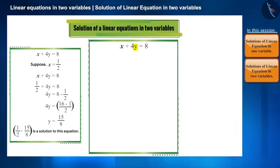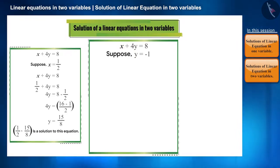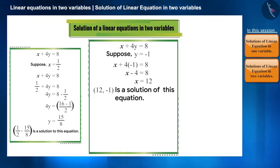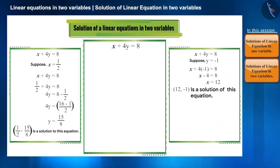Similarly, for any value of x we can find the corresponding value of y, or by taking any value of y we can find the corresponding value of x. Let's take the value of y as -1 and find the value of x. We get x = 12. So (12, -1) is another solution to this equation. Note that even though we found x by substituting y, while writing the solution we write it in the order x, y only.